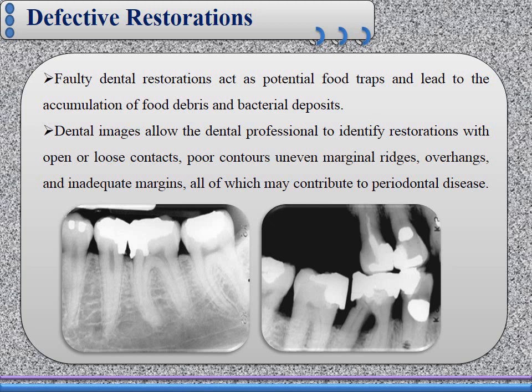Another contributing factor for periodontitis is defective restoration. Faulty dental restorations act as potential food traps, mechanically allowing accumulation of food debris and bacterial plaque, which leads to calculus formation — the most important factor for periodontitis. Dental images allow the dental professional to identify restorations with open or loose contacts, poor contour, overhang amalgam restoration, and inadequate margins — all of which may contribute to periodontal disease. As seen in the radiograph, overhang amalgam, open contact, poor contour of restorations, and inadequate margins act as predisposing factors for periodontitis.